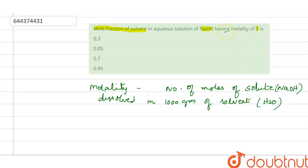Now we know the molality of sodium hydroxide is 3, so number of moles of sodium hydroxide is 3. Number of moles of NaOH is 3.